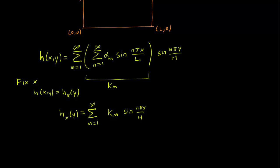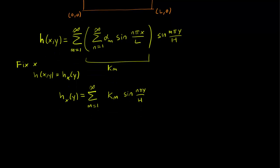There you may notice that this is exactly the regular one-dimensional Fourier sine series, and we know already what the Fourier coefficients are for those. We have k_m equal to 2 over H integral of h_x(y) sin(m pi y over H) dy, integrated from 0 to H. This is just what we did in chapter 2 of this book.